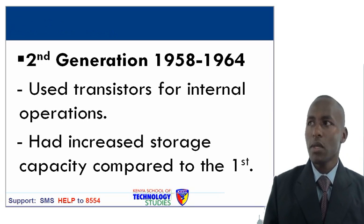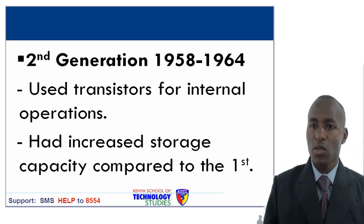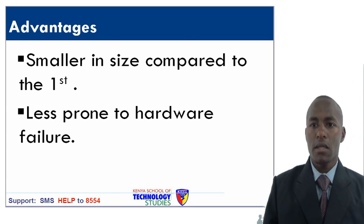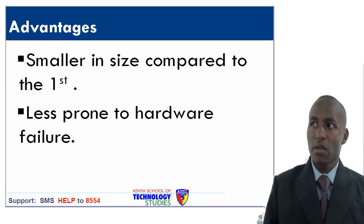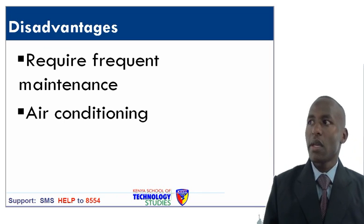The second generation of computers was from 1958 to 1964. It used transistors for internal operation and had increased storage capacity compared to the first generation. Advantages: it was smaller in size and less prone to hardware failure. Disadvantages: it required frequent maintenance and air conditioning.